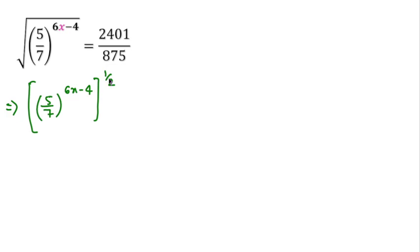This means the 2 will be multiplied in the exponent, so we can write (5/7)^((6x-4)/2) equals 2401/875. We can write 2401 in prime factors. This is divisible by 7, giving 343.